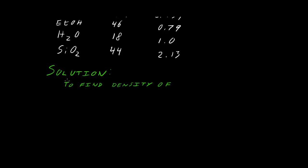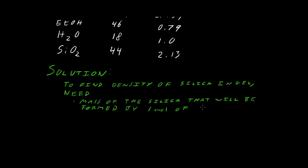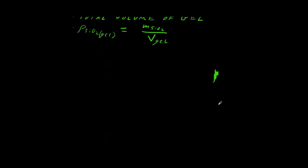So how are we going to go about solving this? To find the density of the silica in the gel, we need to know that one mole of TEOS, how much silica is that going to make? For that one mole of TEOS, just how much silica do we get in grams or in milliliters or cc, whatever you want. We're also going to need to know what the total volume of our gel will be.